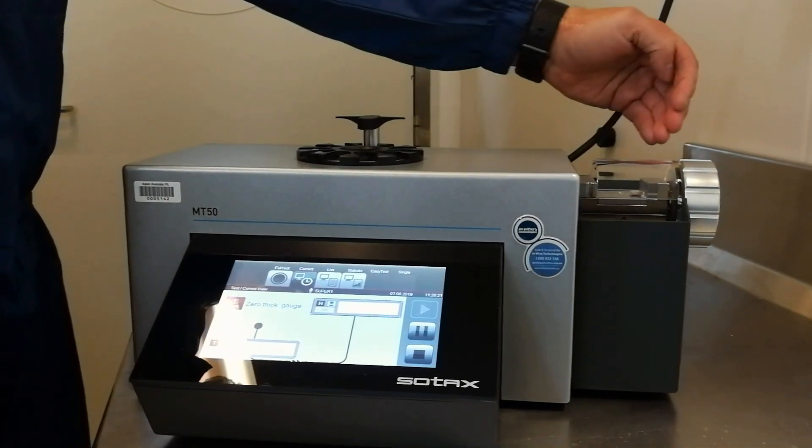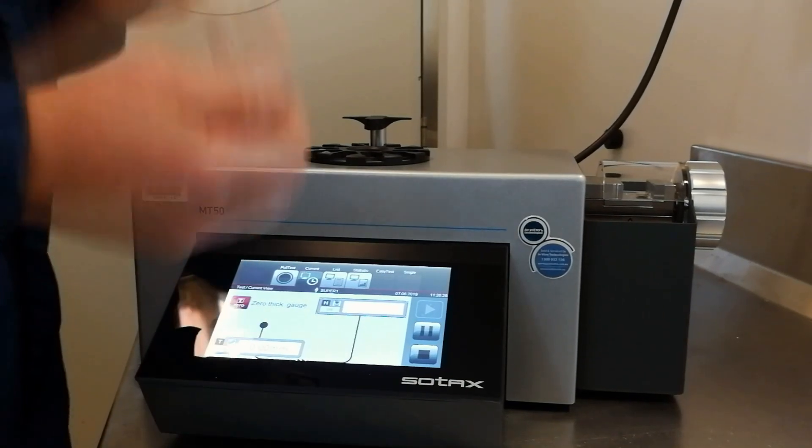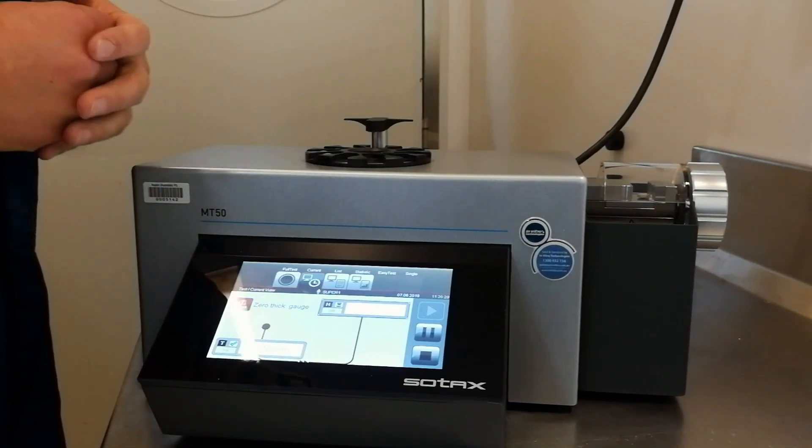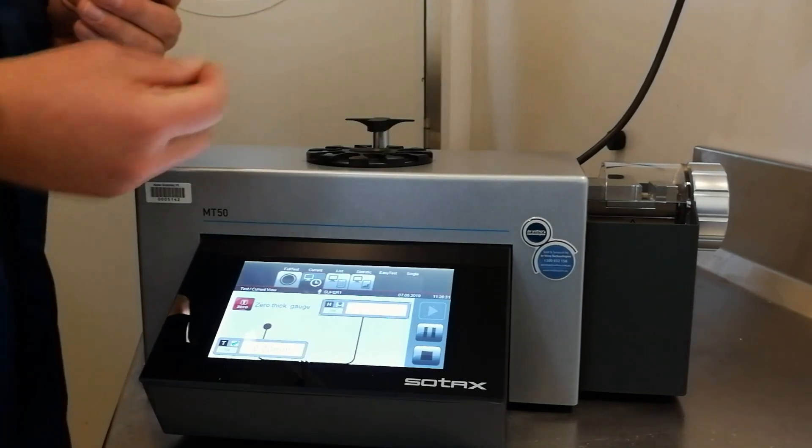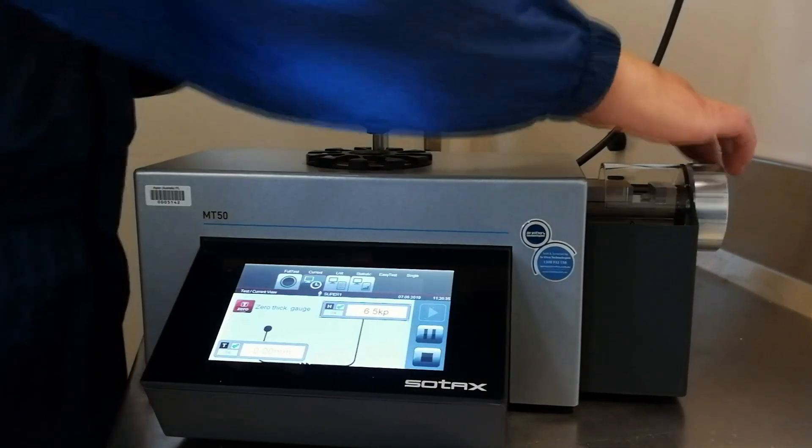You'll notice the tongue comes in from all the way inside. That only happens on the first sample and it will return after the last sample. In between we've set a preset distance of eight millimeters. This is just so operators can get through their tablets a lot quicker rather than waiting for the tongue to go back every time.